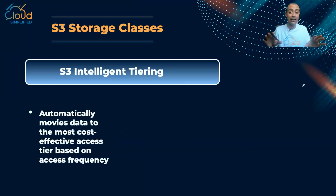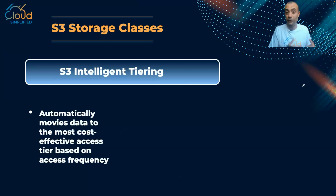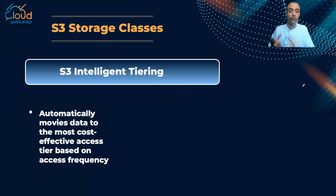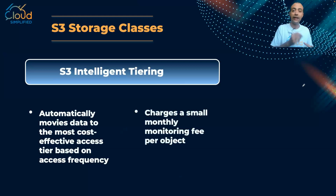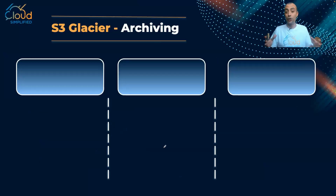Intelligent Tiering automatically tracks the usage of objects. If an object is being accessed frequently, it moves it to S3 Standard. Over time, if an object is not accessed frequently, Intelligent Tiering's machine learning algorithm in the back end tracks the usage and moves that object to a more cost-effective storage class like S3 Standard-IA. Note that Intelligent Tiering charges a small monthly monitoring fee per object, but then adjusts the storage class to make it increasingly cost-effective.